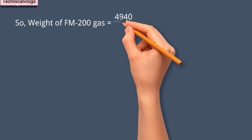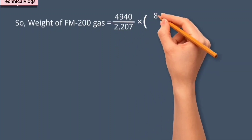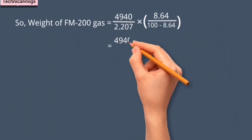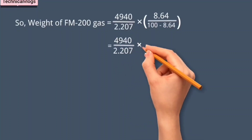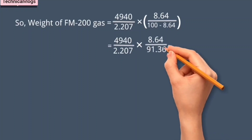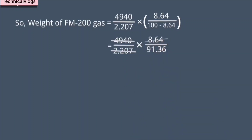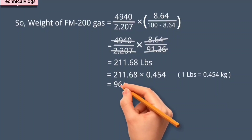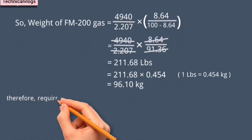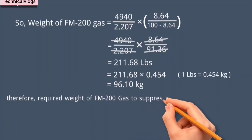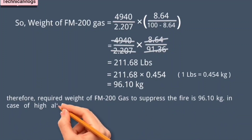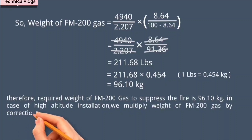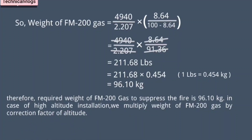After doing the weight calculation of FM-200 gas, we get 211.68 pounds weight of gas. After converting weight from pounds into kilograms, we get 96.10 kilograms. Hence, required weight of FM-200 gas for the given protected area to suppress the fire is 96.10 kilograms. We must also consider a correction factor in case of high altitude installation.